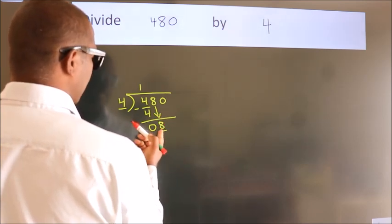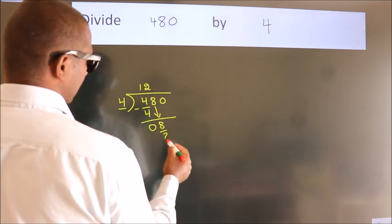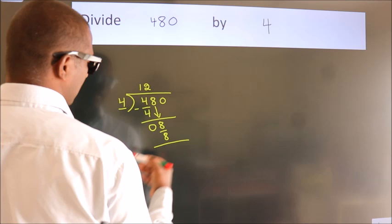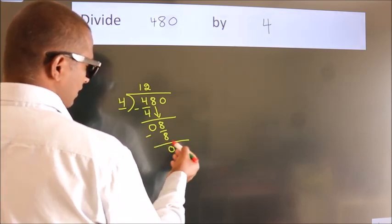When do we get 8? In 4 table. 4 twos, 8. Now we subtract. We get 0. After this,